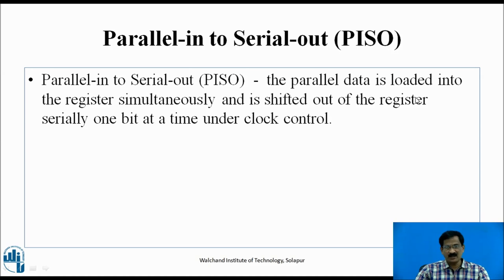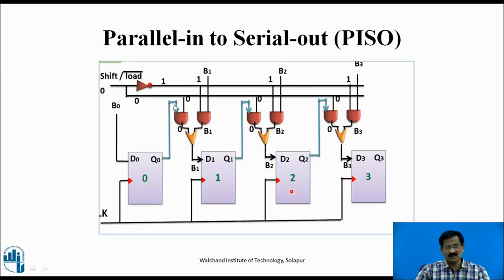Parallel-In to Serial-Out (PISO): The input is in parallel form and the output is taken in serial manner. The circuit uses a shift-load control signal. If this signal is 0, the load becomes active — AND gates B1, B2, B3 are enabled, allowing parallel inputs B1, B2, B3 to be loaded. So when the shift-load-bar signal is 0, data can be loaded in parallel form.